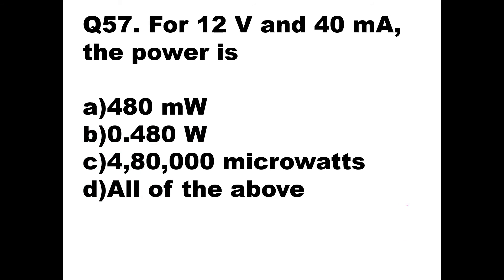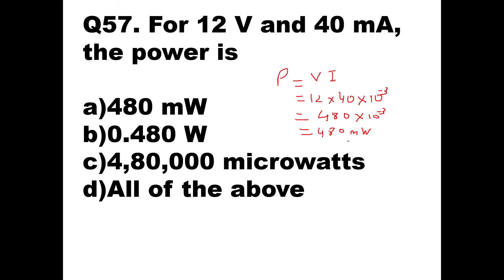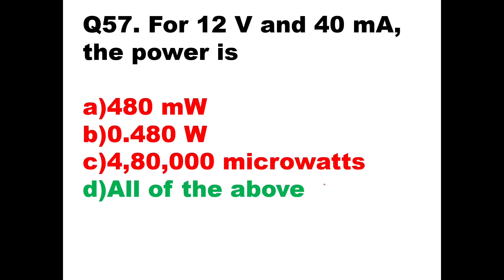Question 57: For 12 volt and 40 milliampere, how much is the power? Power P = V × I = 12 × 40×10⁻³ = 480×10⁻³ = 480 milliwatts, which can also be written as 0.480 watts. All of the options A, B, and C represent the same value in different forms, so option D — all of the above — is the right answer.